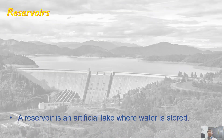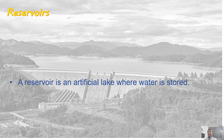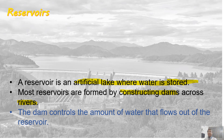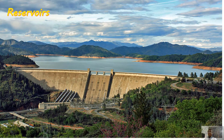Welcome students to this video lecture on reservoirs. A reservoir is an artificial lake where water is stored. The reservoirs get formed when we construct a dam across a river. When we construct a dam across rivers, the impounding of the water — that collection of the water behind the dam — is called the reservoir. The dam controls the amount of water that flows out of the reservoir. This is the dam, and the storage of this water is called the reservoir.